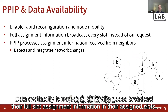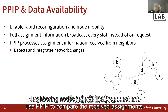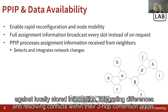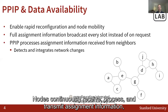Data availability is increased by having nodes broadcast their full slot assignment information in their assigned slots. Neighboring nodes receive the broadcast and use PPIP to compare the received assignments against locally stored information, integrating differences and resolving conflicts within their 3HOP contention areas. Together, these features propagate changes throughout the network.